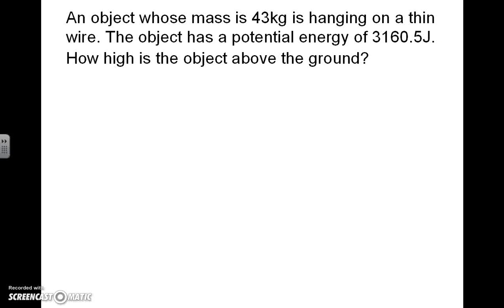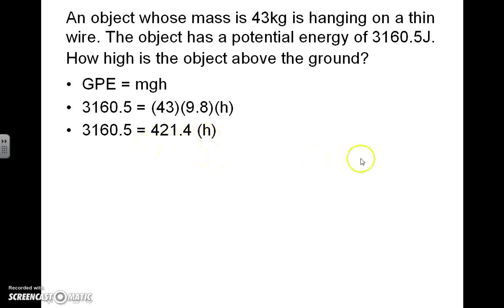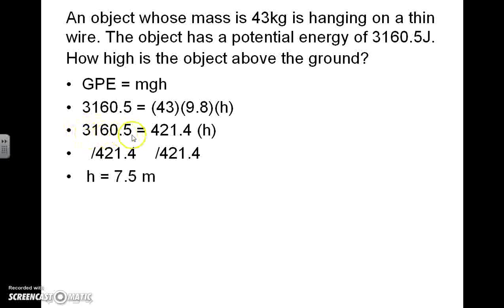Here's the next question: An object whose mass is 43 kilograms is hanging on a thin wire. The object has a potential energy of 3,160.5 joules. How high is that object above the ground? We're solving for height using the gravitational potential energy equation with these substitutions. We can immediately simplify the multiplication on the right: 43 times 9.8 gives 421.4 times height. We then divide both sides of the equation by 421.4, leaving h by itself. Doing 3,160.5 divided by 421.4 gives us 7.5 meters.